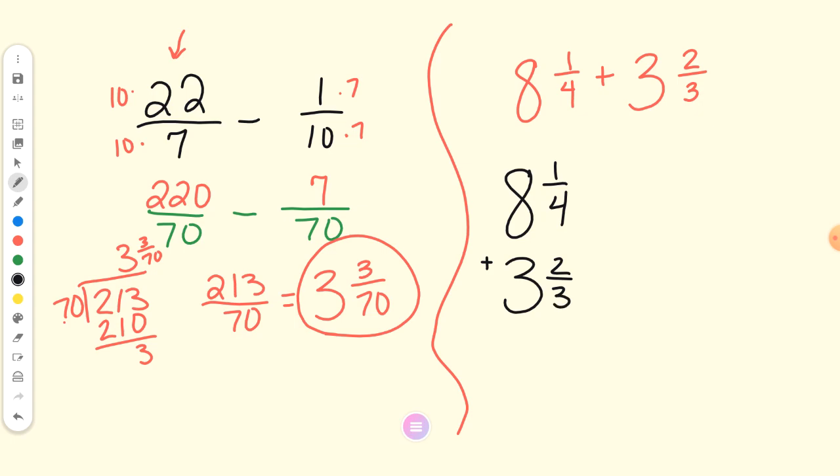I'm still adding fractions, so what do I still need to do, Bryson? Before I can add, what do I need to do? Let's turn one of the bottom, the denominators the same. Yeah, I have to get the denominators the same. Caden, can you think of something that 3 and 4 both go into? 12. 12. Okay, so I want this one to be 8 and something over 12, and I want this one to be 3 and something over 12.